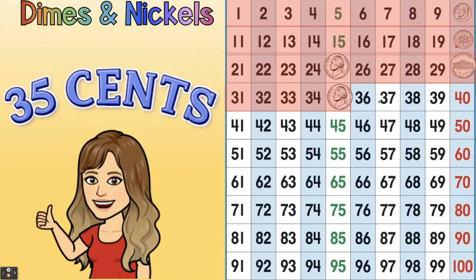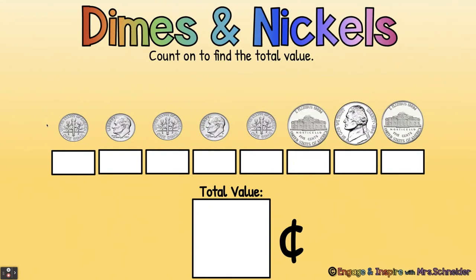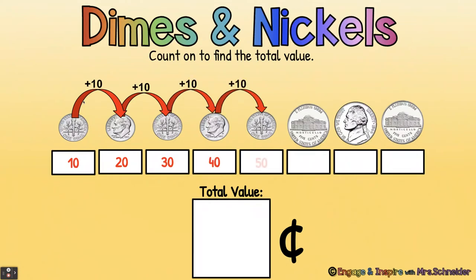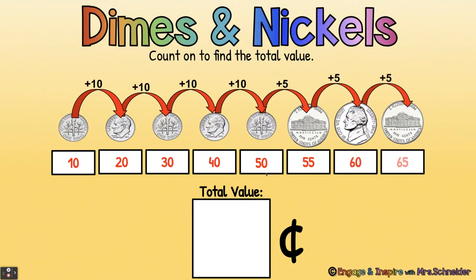Remember, the nickels zigzag back and forth — landing on a five, then a zero, then a five, then a zero. So we put our two dimes here, then back and forth. Let's practice counting on: first count by tens, then switch to fives. Ten, twenty, thirty, forty, fifty — now switch and count by fives: fifty-five, sixty, sixty-five. The total value is sixty-five cents.